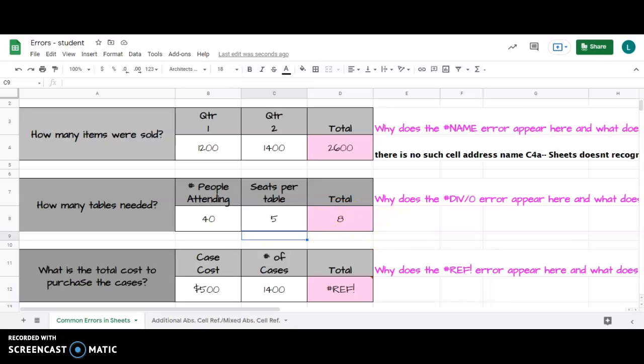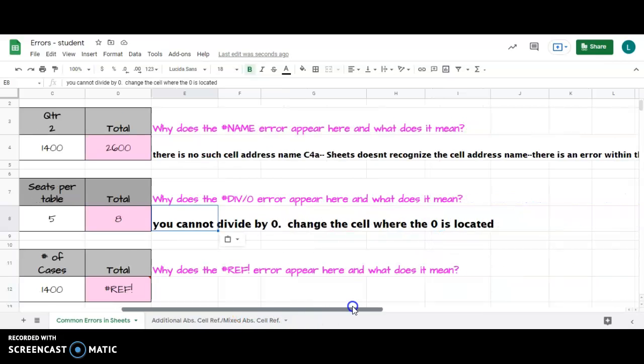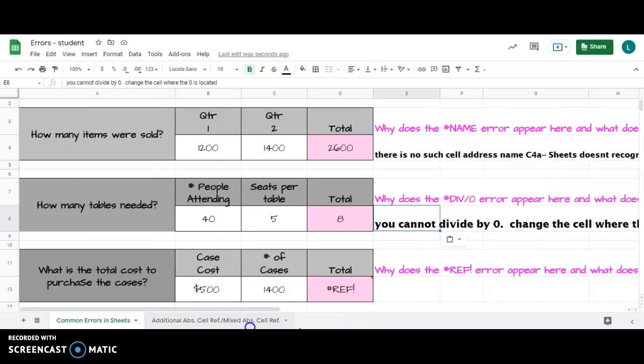So why does the DIV error appear? Because you cannot divide by zero. So you're going to change this number so that it doesn't represent a zero—represents an actual number so that the division error does not appear.